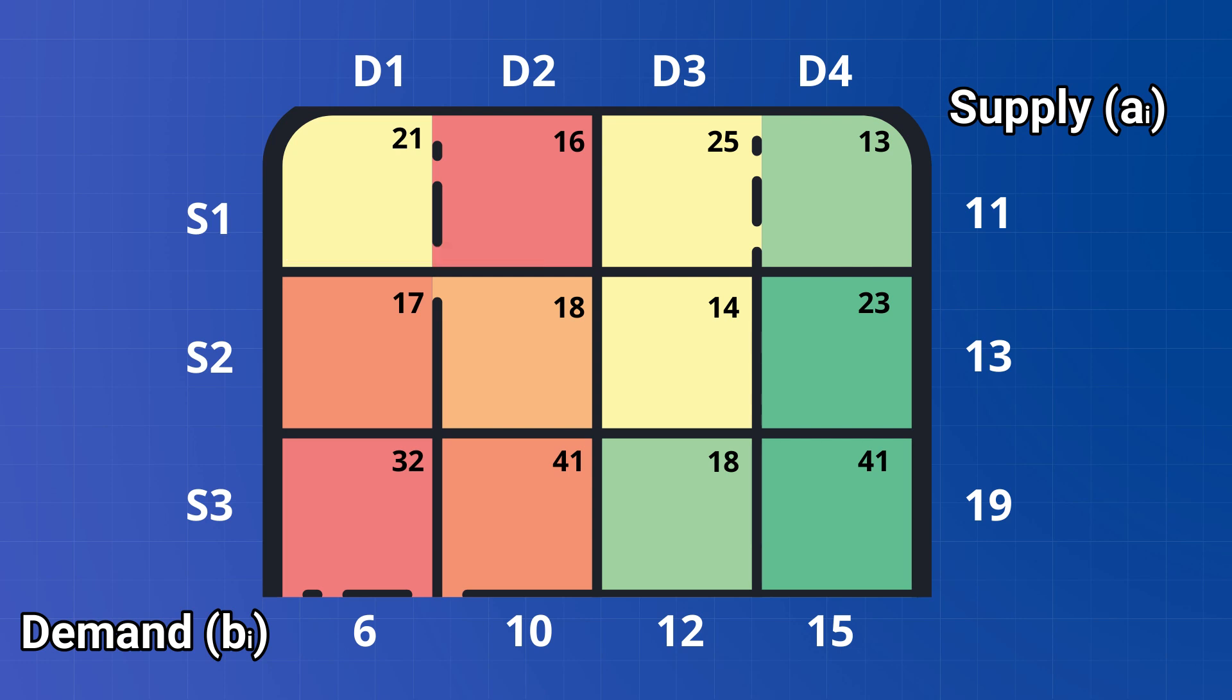So the most appropriate value here would be 6 since it will completely suffice the demand value in the corresponding column. So we will write 0 in the corresponding demand value and subtract 6 from the supply value of corresponding row. So we have 5 remaining here.